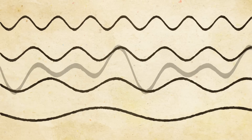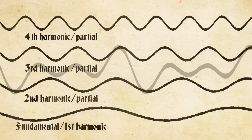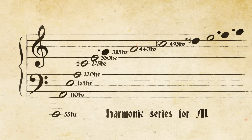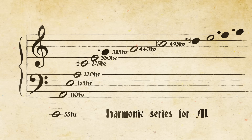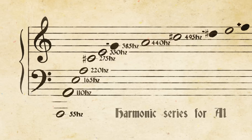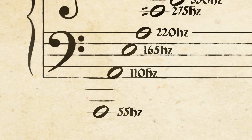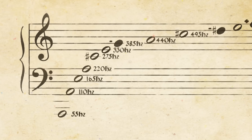These overtones break down into specific frequencies called harmonics or partials, and manipulating them is how opera singers work their magic. Every note has a set of frequencies that comprise its harmonic series. The first partial vibrates at twice the frequency of the fundamental, the next partial is three times the fundamental's frequency, and so on.